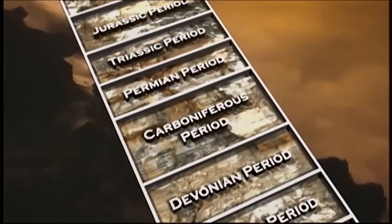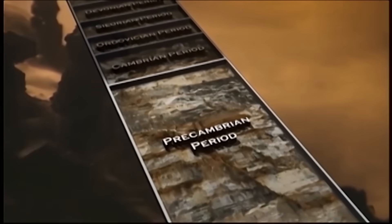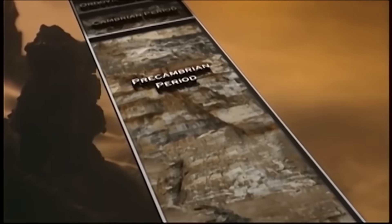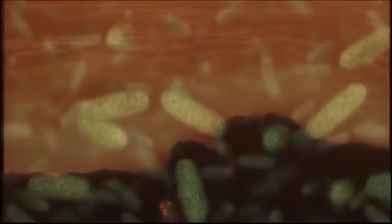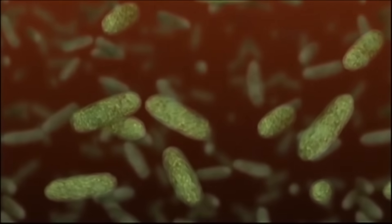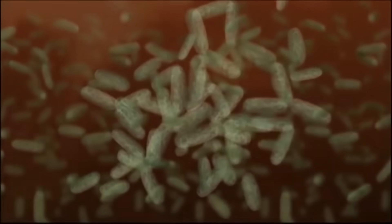According to standard estimates, almost 90% of the earth's history took place during the Precambrian geological period. While our knowledge of the Precambrian is far from comprehensive, most textbook accounts include a similar chronology and chain of events. About three and a half billion years ago, primitive life first appeared on earth in the form of single-celled bacteria. Over time, these cells gathered into clusters to form blue-green algae that floated on the surface of the oceans.